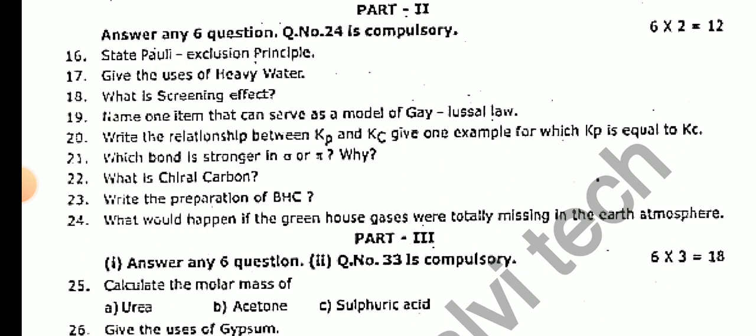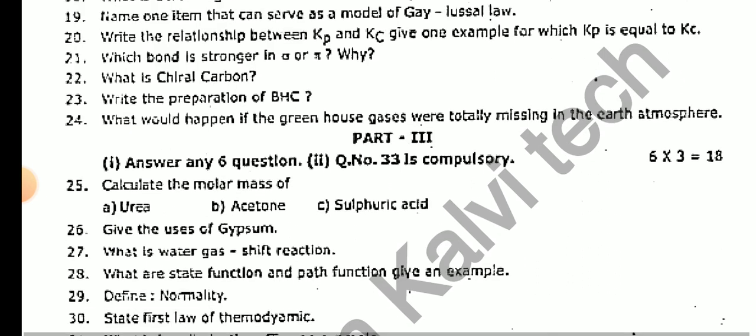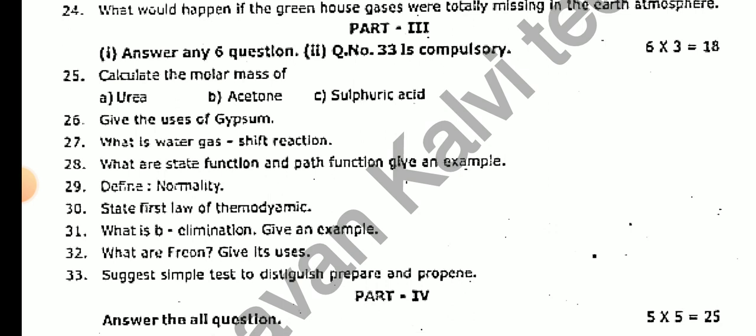What would happen if greenhouse gases were totally missing in the earth's atmosphere? Calculate the molar mass of urea, acetone, sulfuric acid. Give the uses of gypsum. What is water gas shift reaction? What are the state functions and path functions? Give an example and define normality.